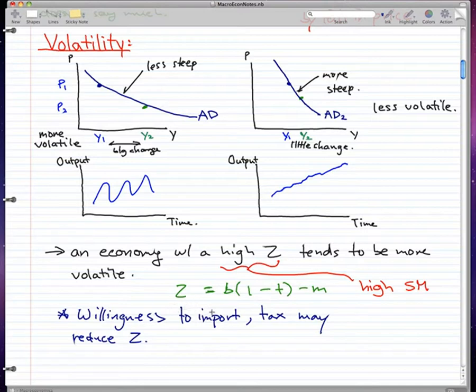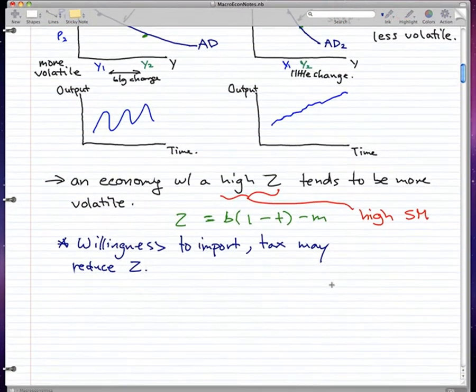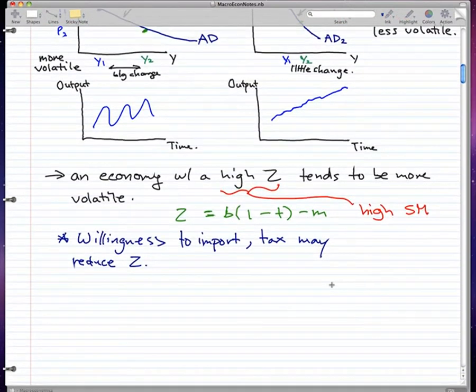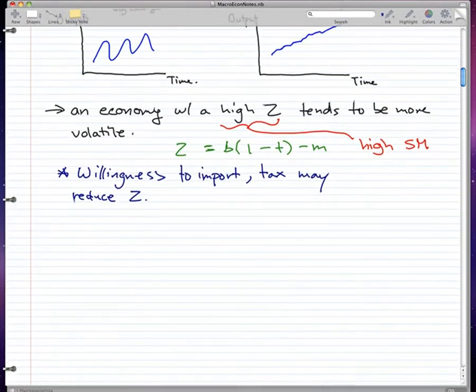That will make Z smaller and the economy more stable than if we had a low T and low M, or low willingness to import and low willingness to tax. The new stuff in this video would be changes in aggregate demand.